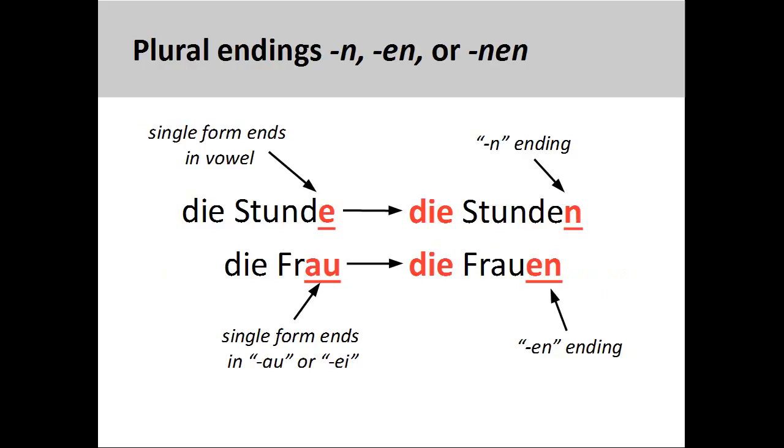Nouns ending in a vowel such as Stunde, hour, will also only add an -n. However, if the noun ends in a diphthong, AU or EI, such as Frau, woman, then an -en is added, Frauen.